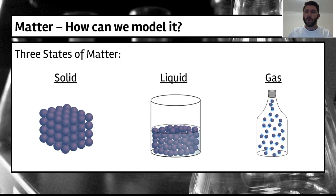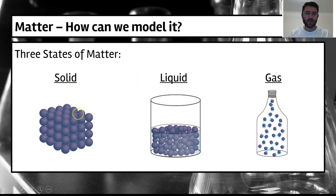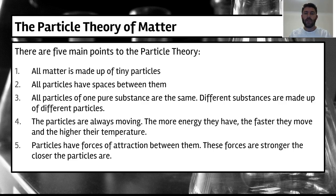We saw this model in the last video, which described all three states of matter — solids, liquids and gases. Now we're going to look at these particles and the theory around them when it comes to matter. There are five main points to the particle theory.